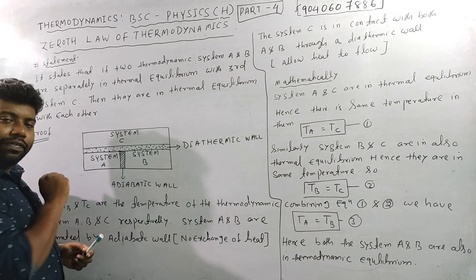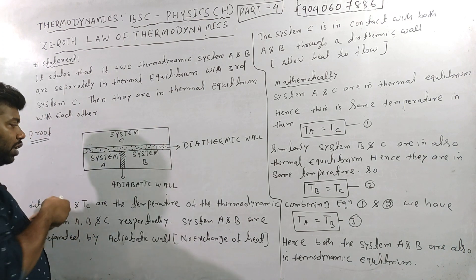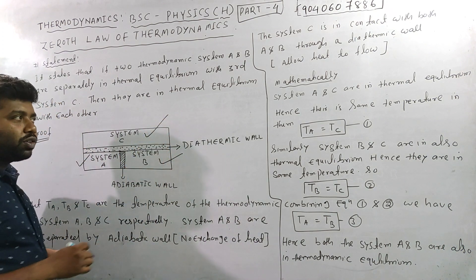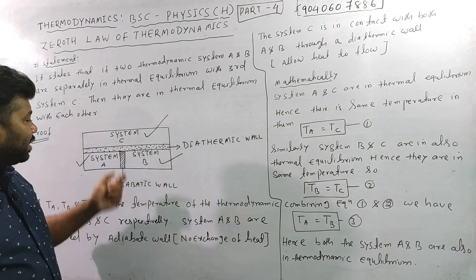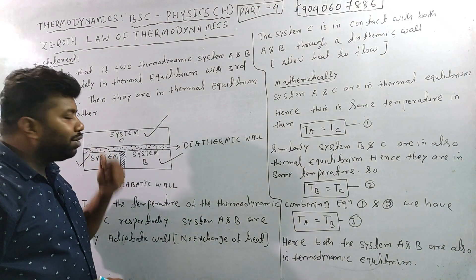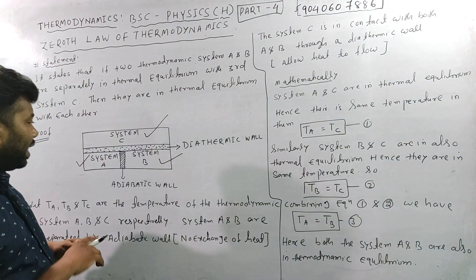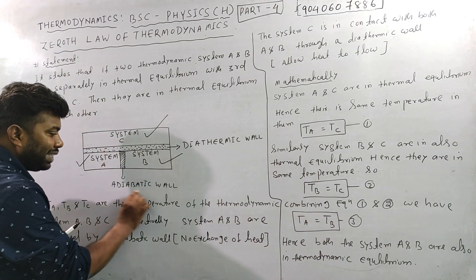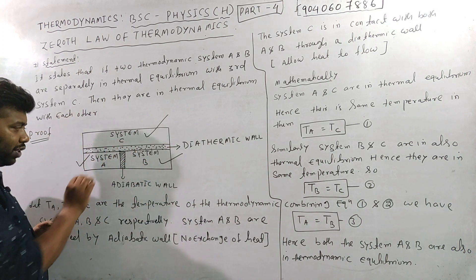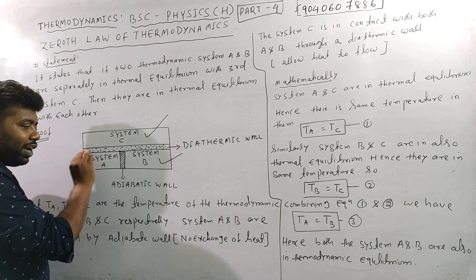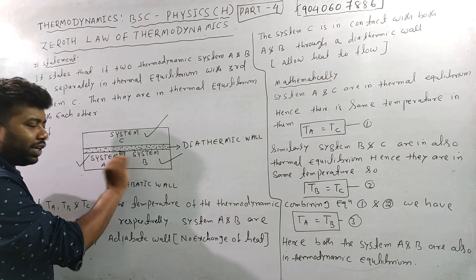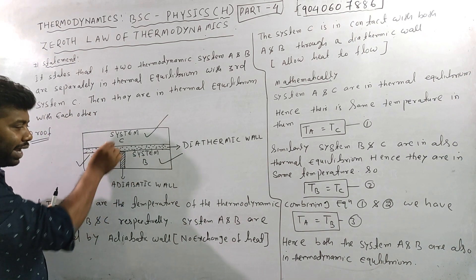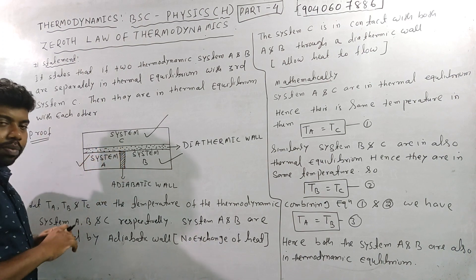We have 3 different systems: system A, system B, and system C. System A and system B are separated by an adiabatic wall. An adiabatic wall means that there is no heat interchange between system A and system B — it does not allow heat transfer.